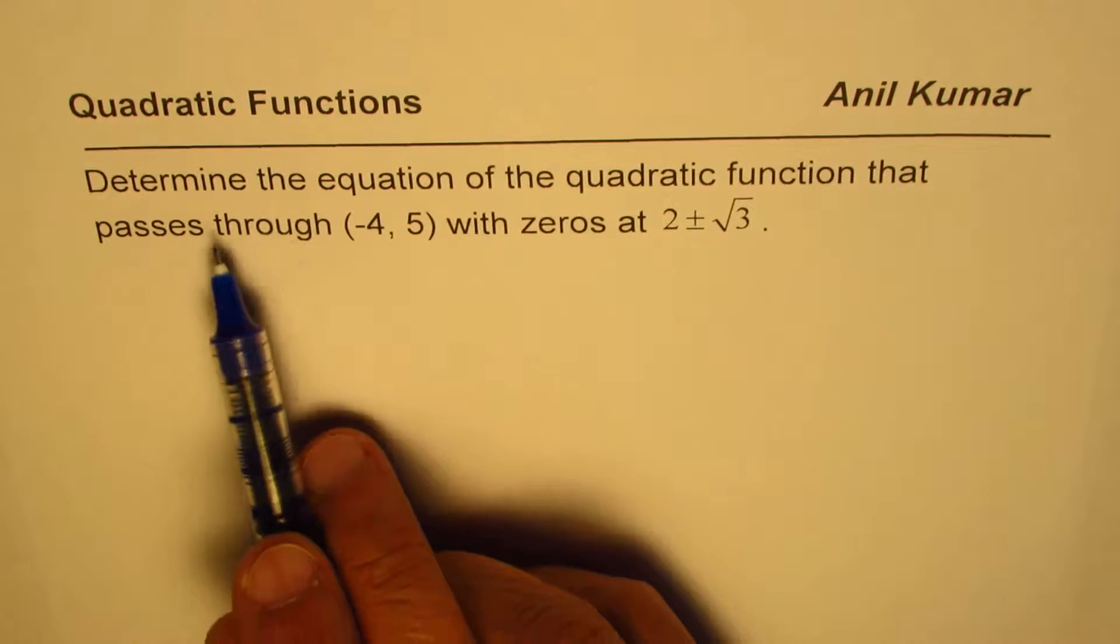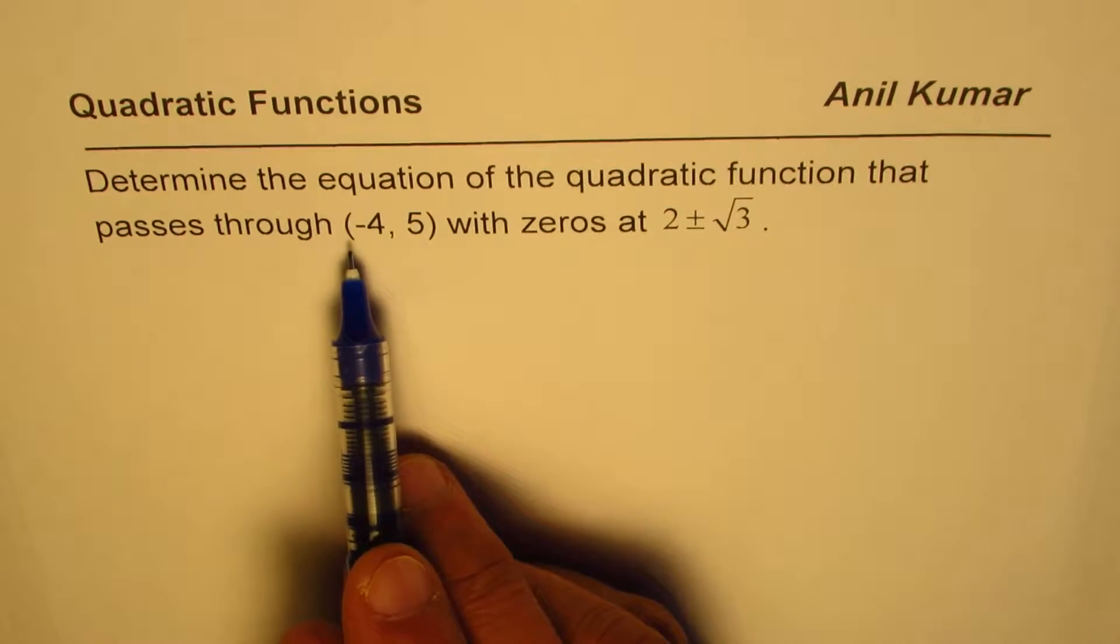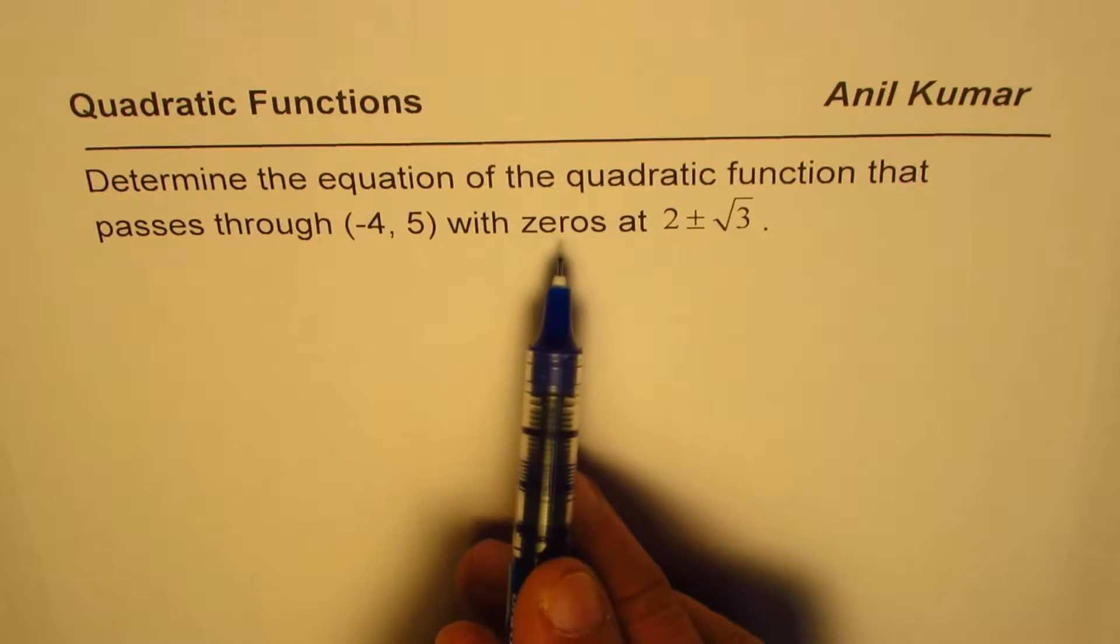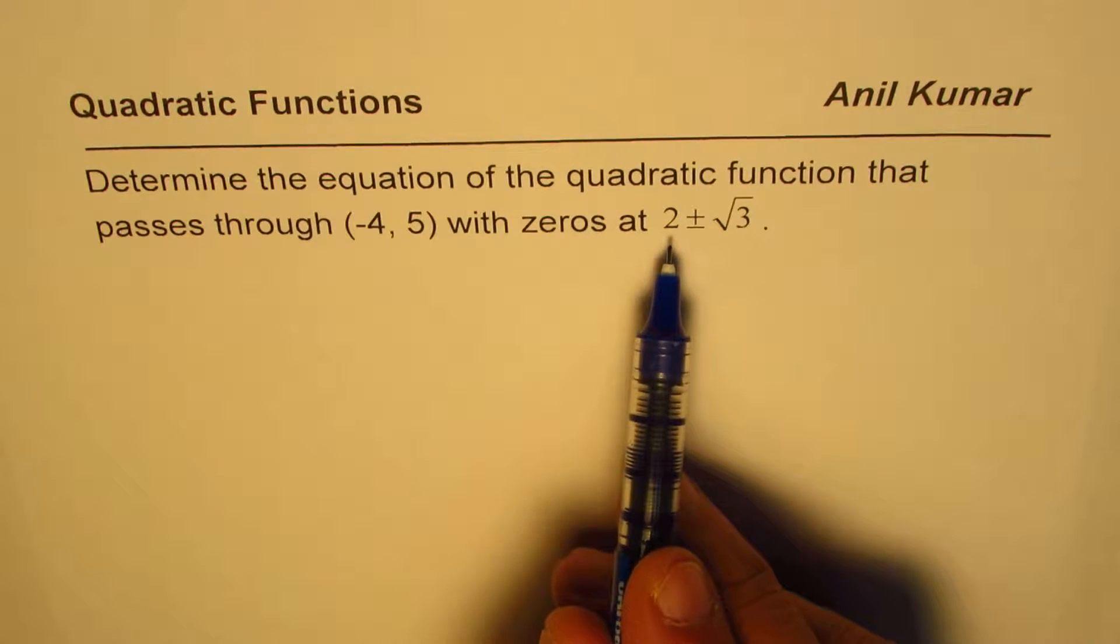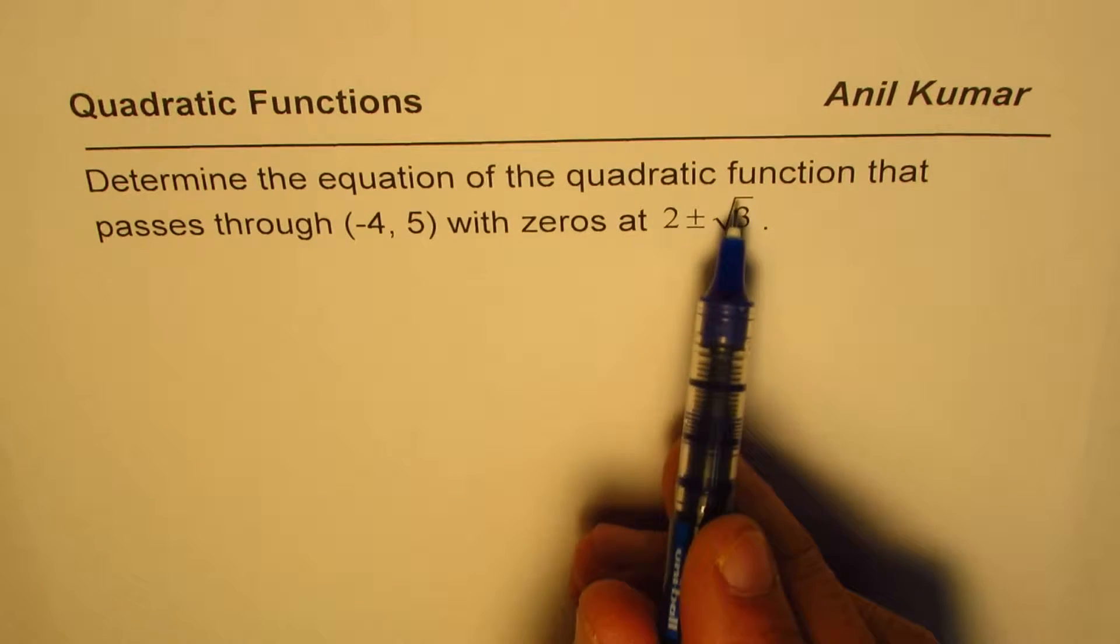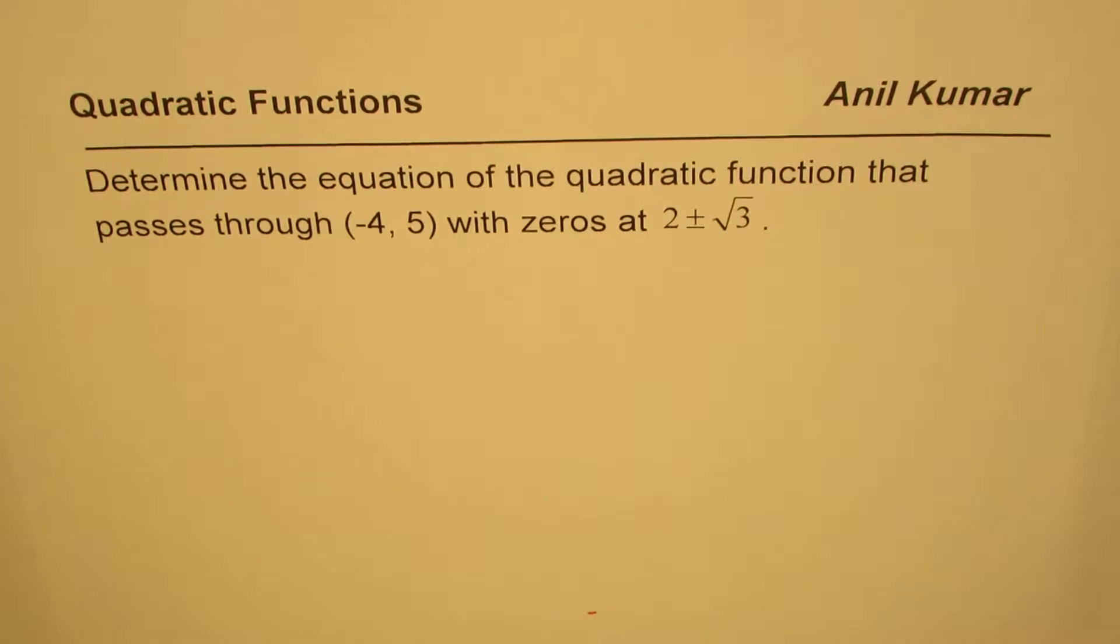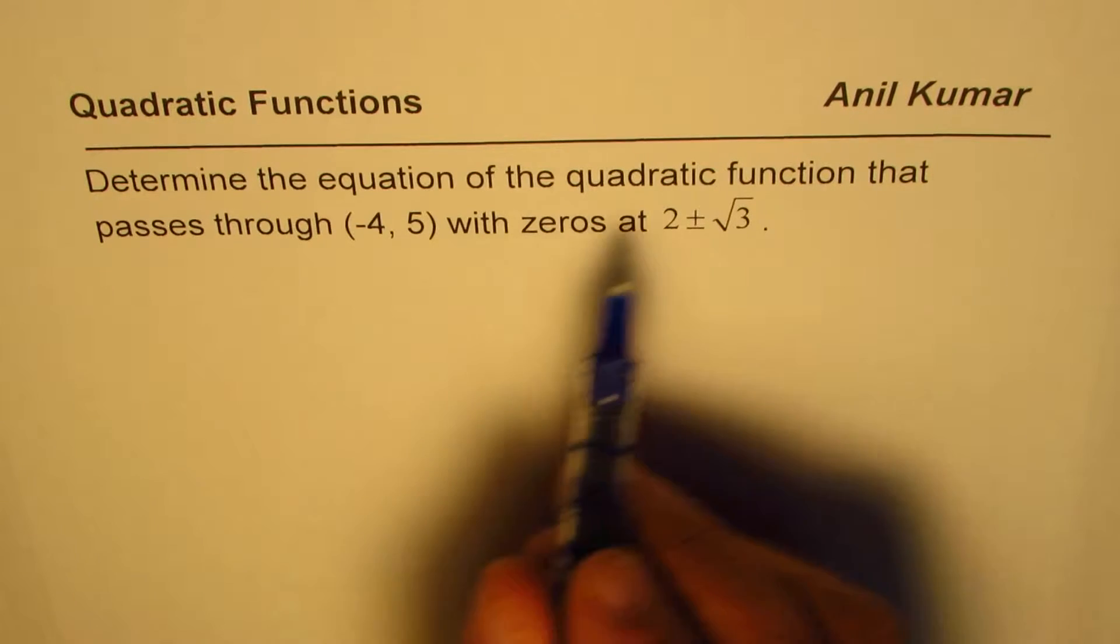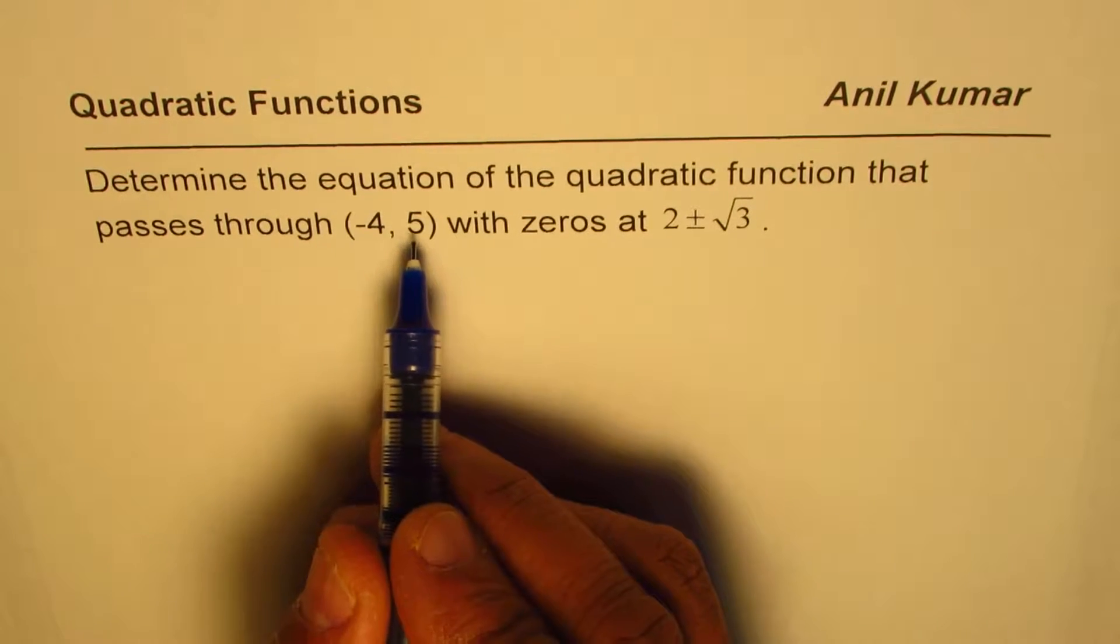The question is: determine the equation of the quadratic function that passes through (-4, 5) with zeros at 2 ± √3. So there are two zeros: one is at 2 + √3, the other is at 2 - √3, and the point through which the graph of the quadratic function goes is (-4, 5).